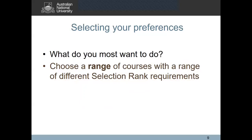Now let me give you a little bit of advice about how to select your preferences. The first thing to consider is what it is that you most want to study at ANU and put that as your first preference. It is strongly advised that you don't have your preferred program as a lower preference on the assumption that you may not be eligible, because at this stage you're unaware if you are eligible for any equity, subject, or performer adjustment factors which will increase your overall selection rank and you may become eligible for your preferred program.